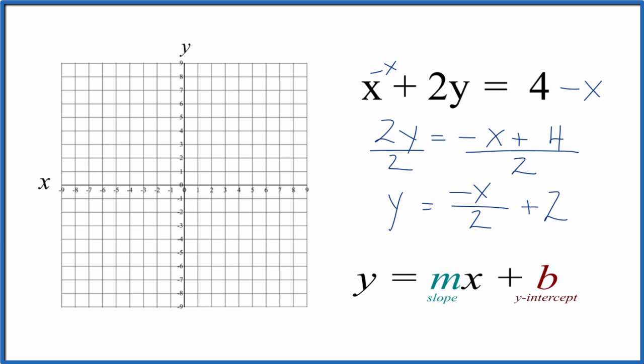It's fairly easy to graph. We go to the y-intercept - that's 2. So the y-axis here, we find 2. That's where we'll intercept the y-axis. Then we go to this point here.